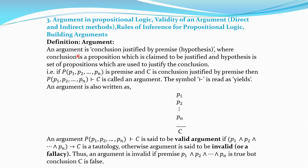Now we will see the definition of argument in logic. In real life also we do arguments with each other, so what is an argument in logic? An argument is a conclusion justified by premises, meaning hypothesis. We have to justify the conclusion by using the hypothesis — that is, given or known things. The premise is the hypothesis, and the conclusion is a proposition which is claimed to be justified. If P1, P2, ..., Pn are premises and C is the conclusion justified by the premises, then we write the argument as P1, P2, ..., Pn ⊢ C, which is called an argument.